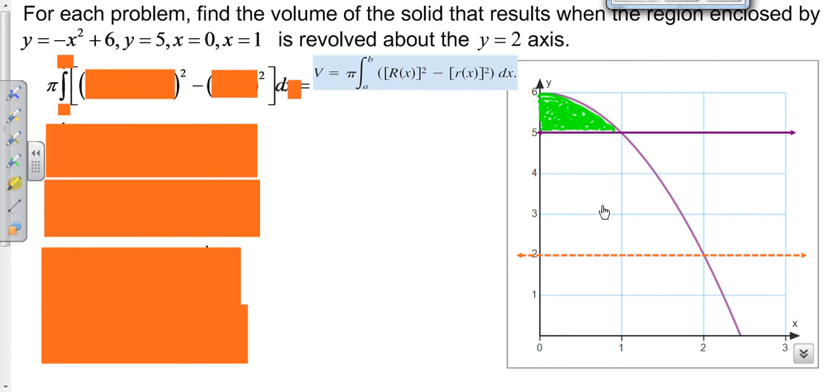This is our axis of revolution, so this is coming out of the computer screen, going around this, going back behind it, and coming back up. So we have a hole in the middle, so that means we have a washer.